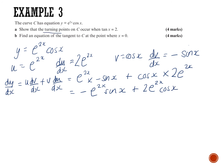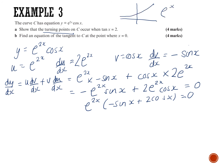Applying the product rule: dy/dx = e^(2x)·(−sin x) + cos x·2e^(2x), which tidies to −e^(2x)sin x + 2e^(2x)cos x. For turning points the gradient is zero, so factoring out e^(2x): e^(2x)(−sin x + 2cos x) = 0. Since e^(2x) is always positive and never zero, we solve the bracket: 2cos x = sin x, and dividing by cos x gives tan x = 2.